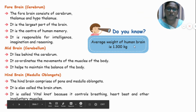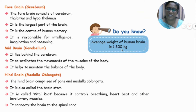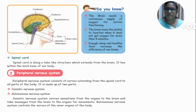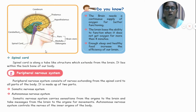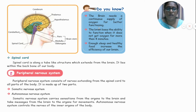Did you know the average weight of a human brain is 1.3 kg? Now, the spinal cord. The spinal cord is a long tubular structure which extends from the brain and lies within the backbone of our body. The brain needs a continuous oxygen supply for better functioning. The brain loses the ability to function when it does not get oxygen for more than 4 minutes.